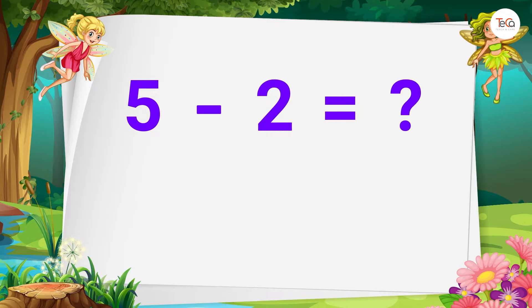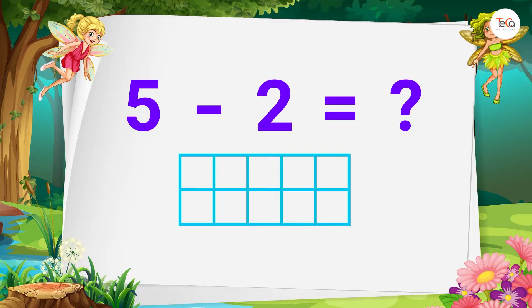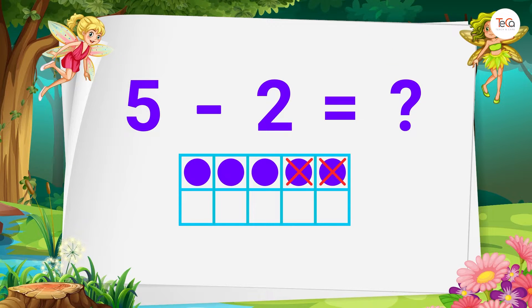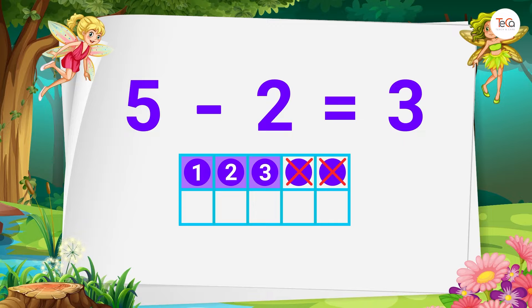If you have to subtract — for example, five minus two — you can use a ten frame to subtract like this. Draw five dots, then cross out two dots, then count the dots left to find the difference. Here we have one, two, three — so there are three dots left. Therefore, five minus two equals three. Now let's practice.